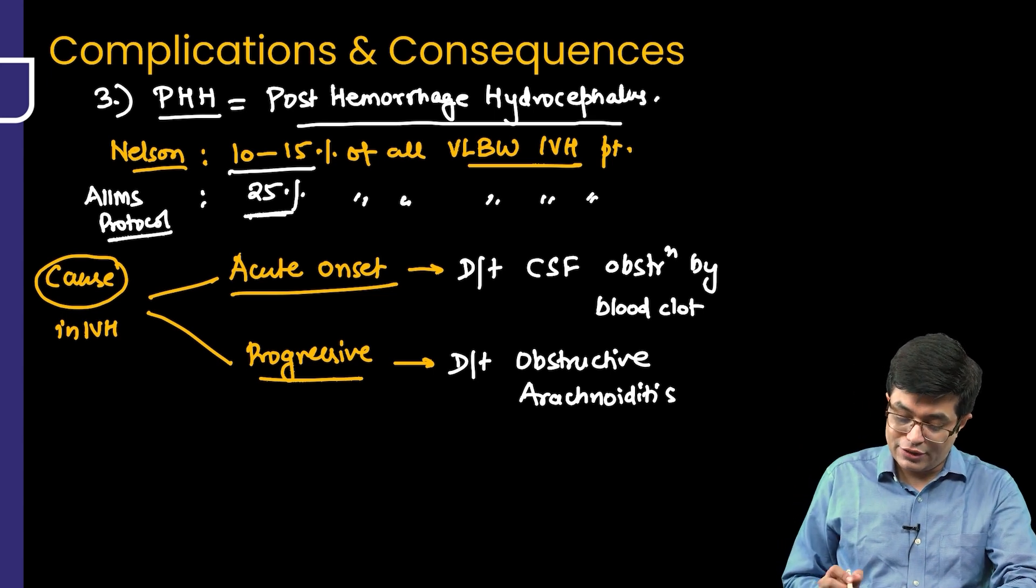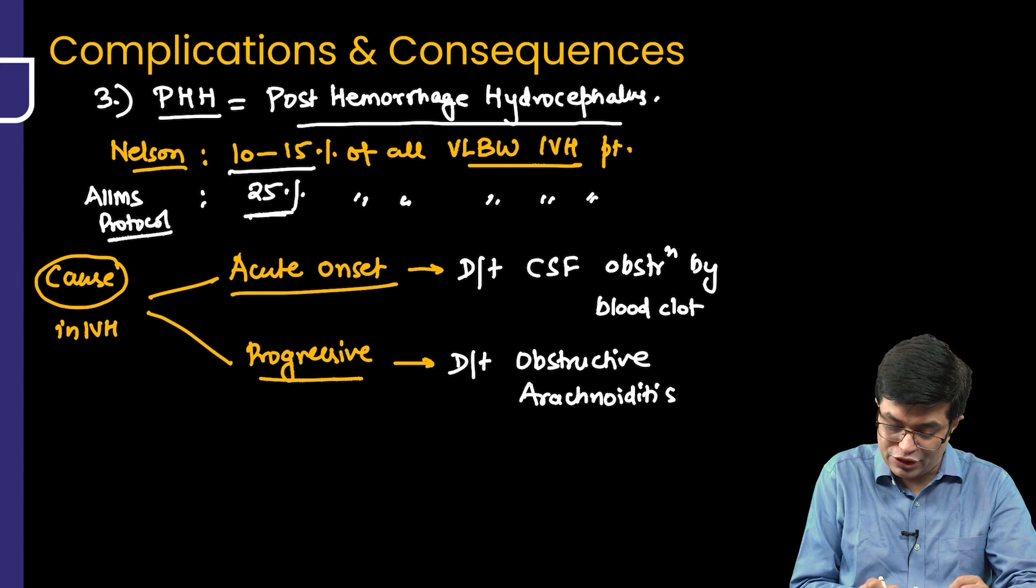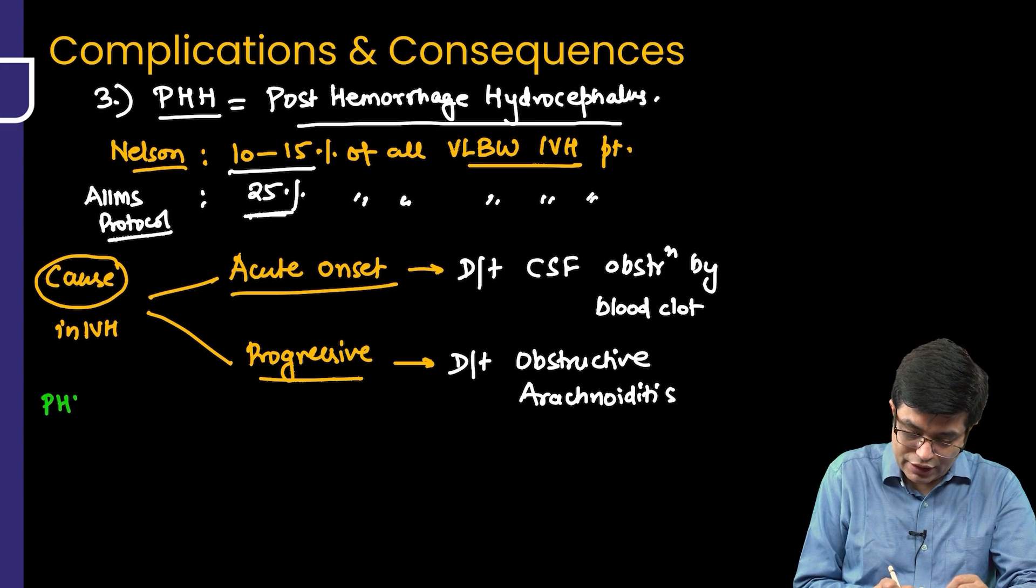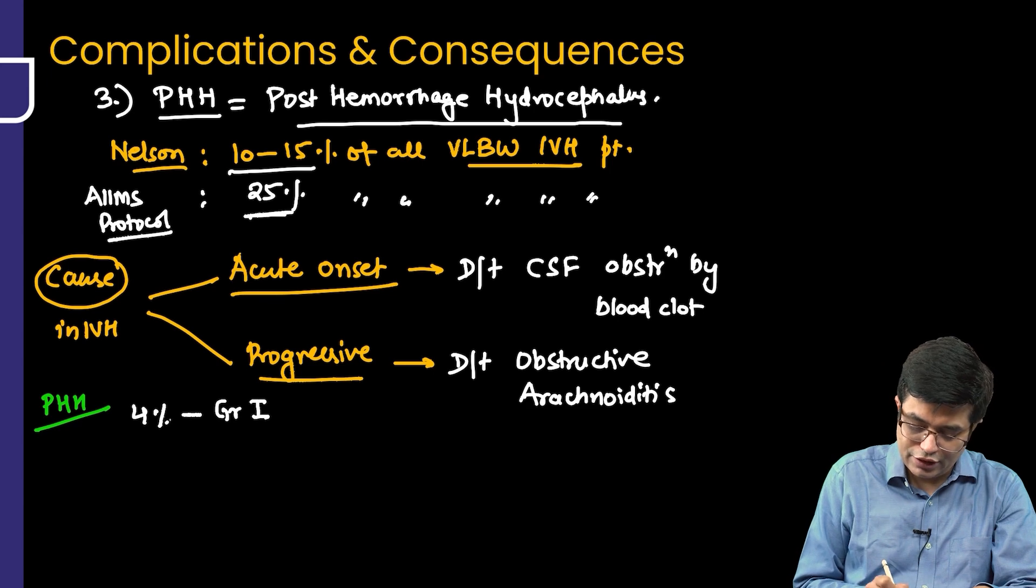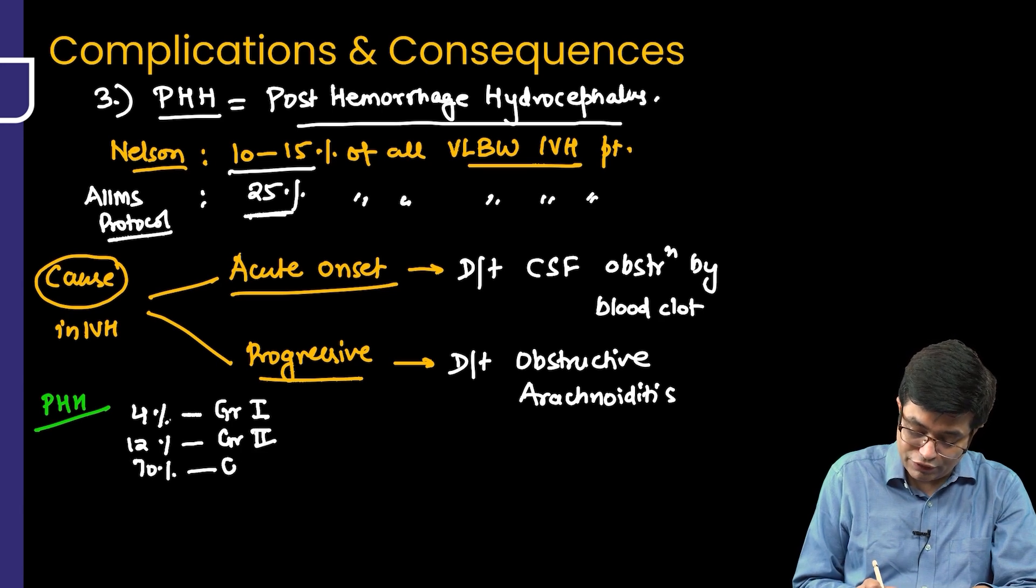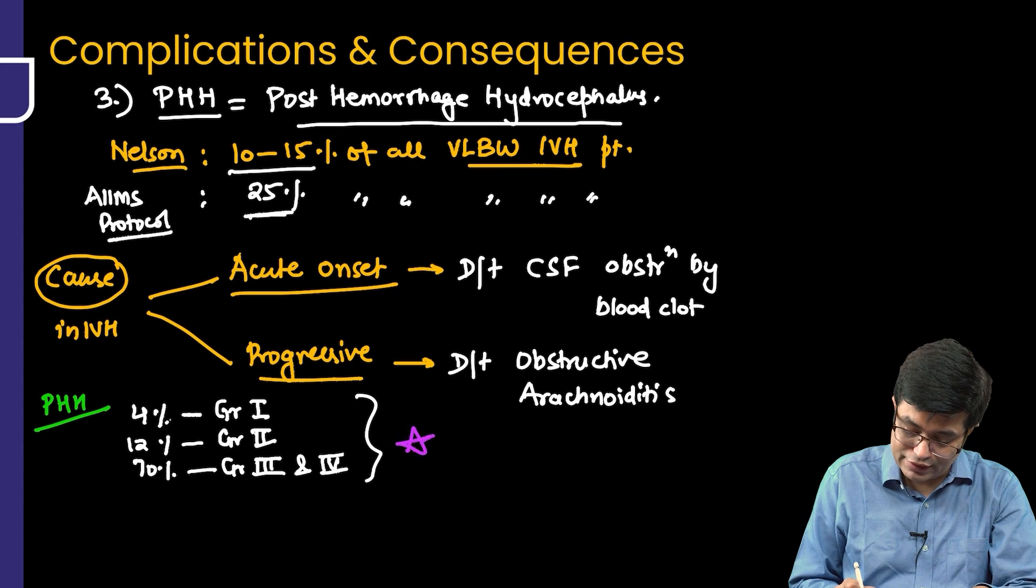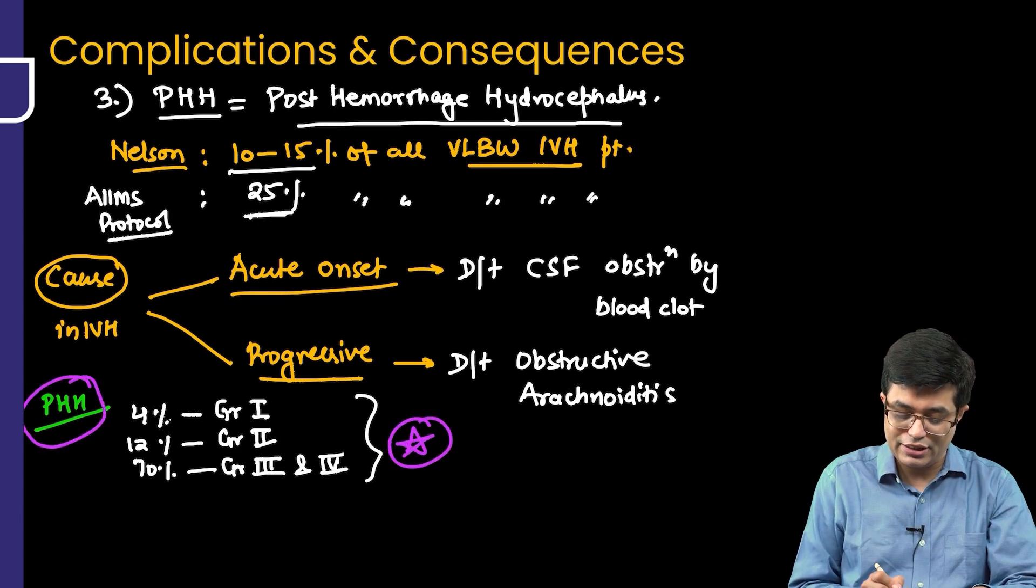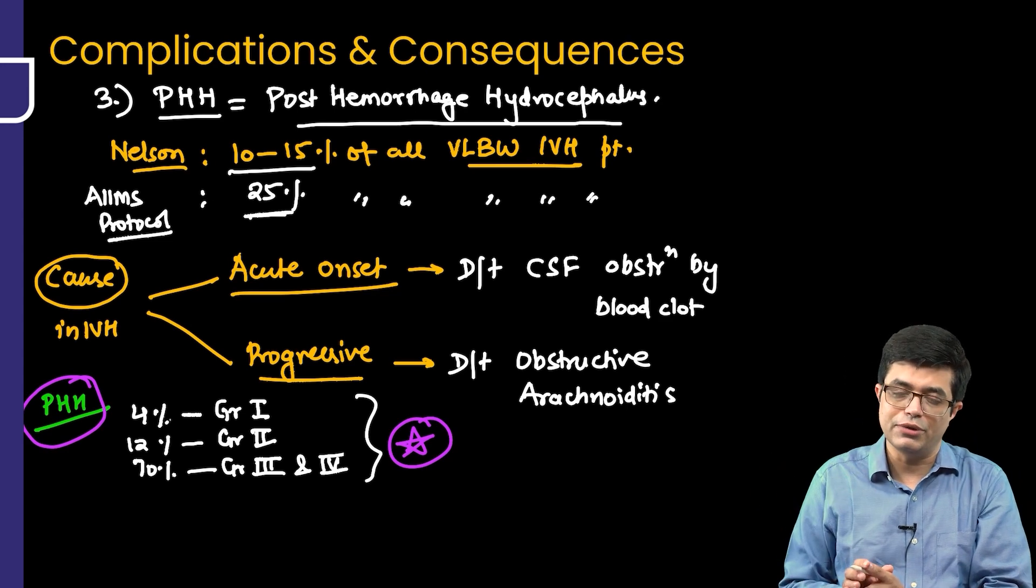What are the chances of post hemorrhagic hydrocephalus to happen? Remember that PHH occurs in about 4% cases of grade 1 IVH, about 12% cases of grade 2 IVH and about 70% cases of grade 3 and 4 IVH. Can you see how drastic this difference is? PHH, that is hydrocephalus, is related to how severe the IVH with the patient is.